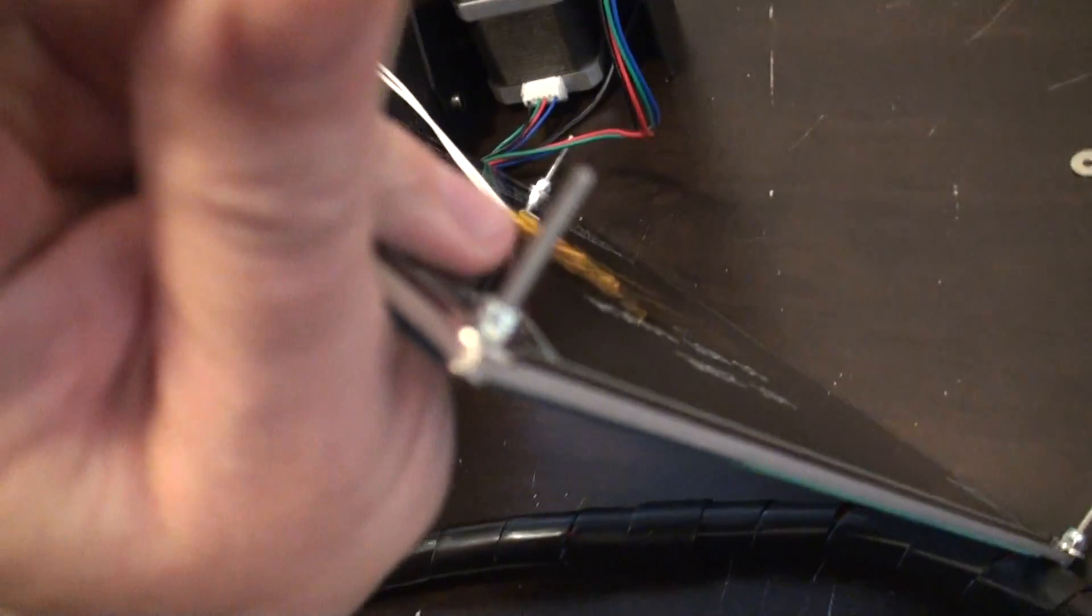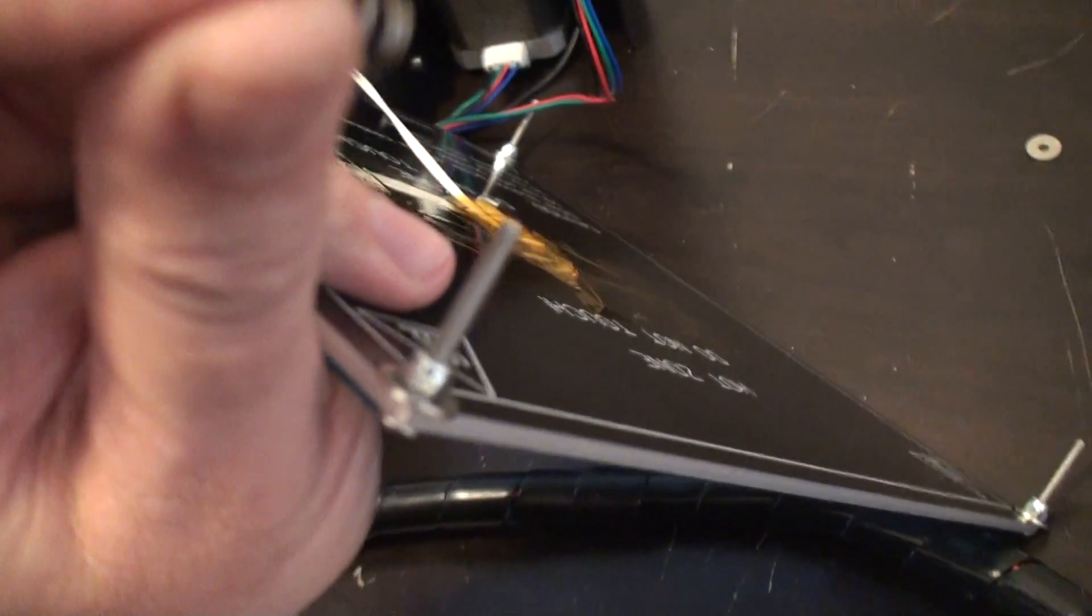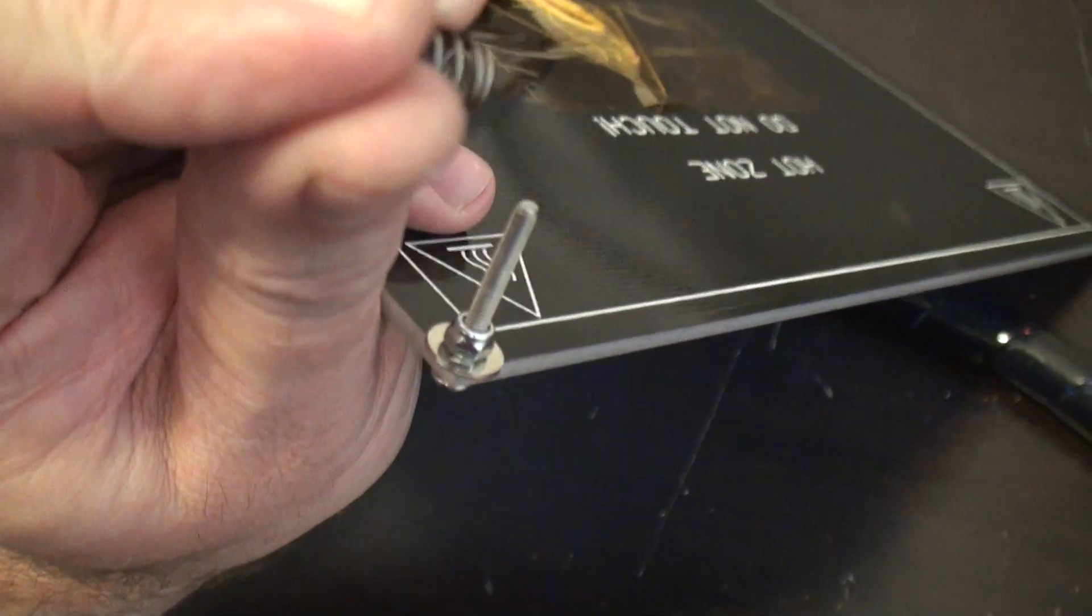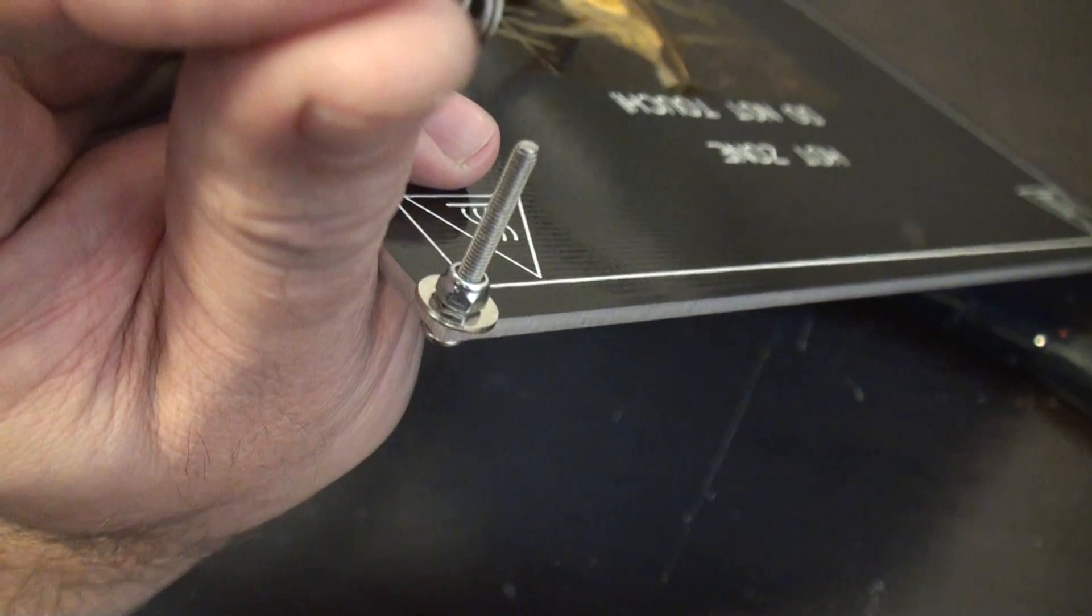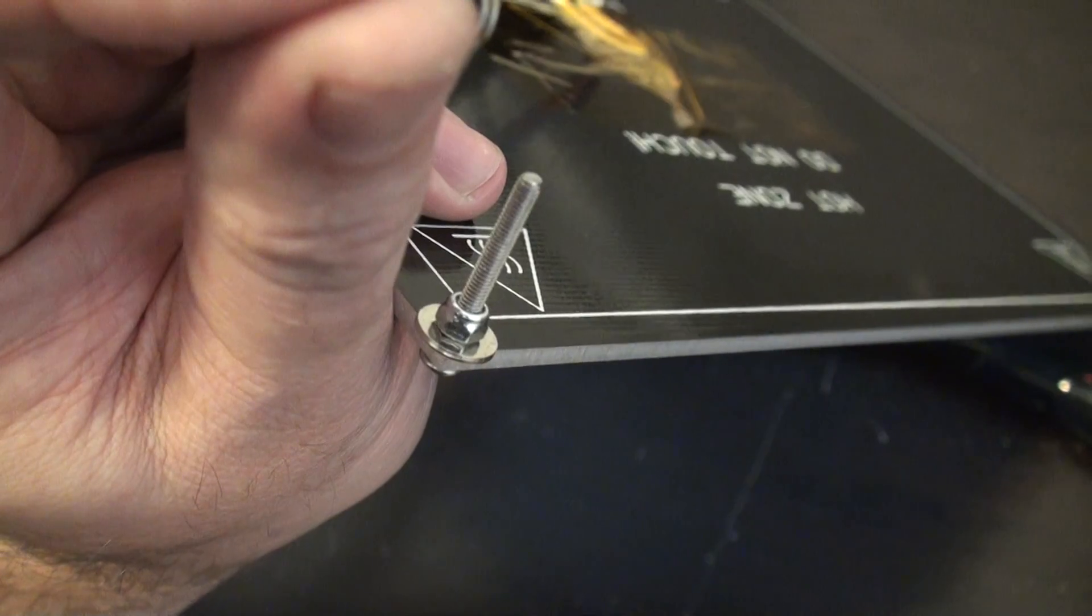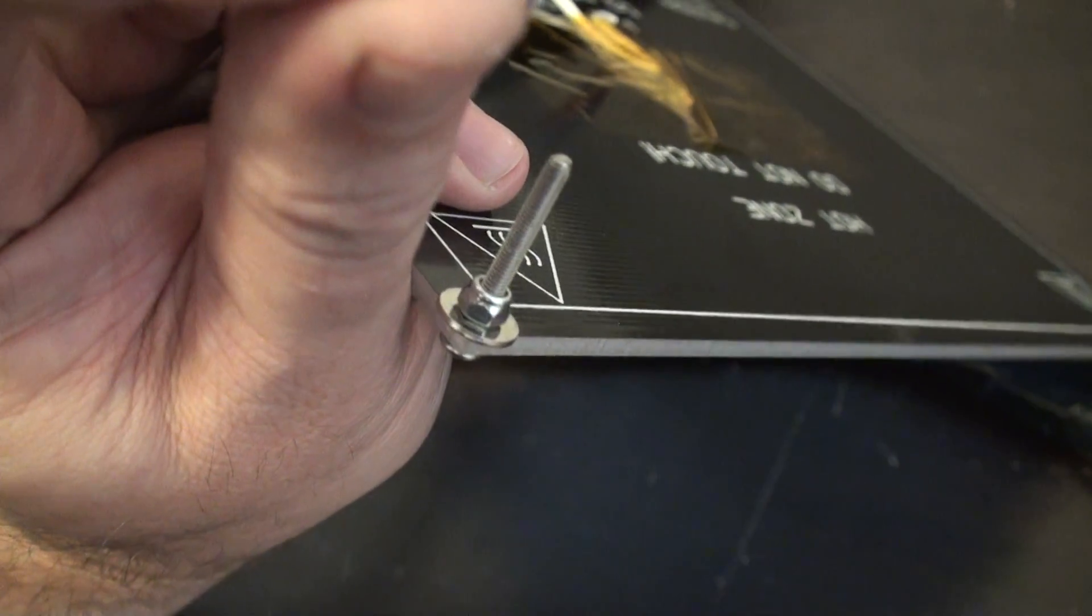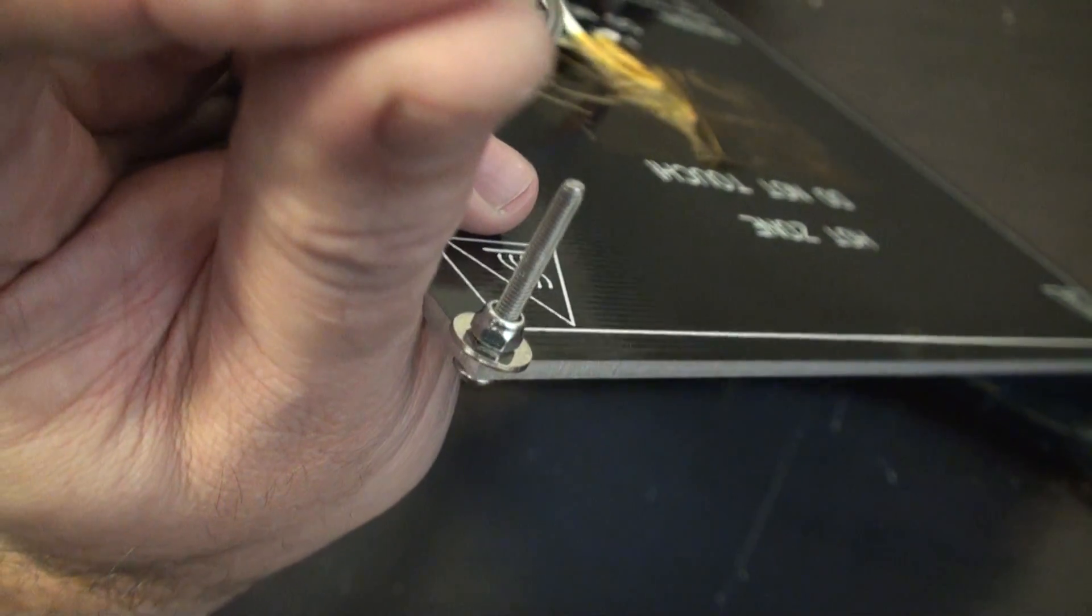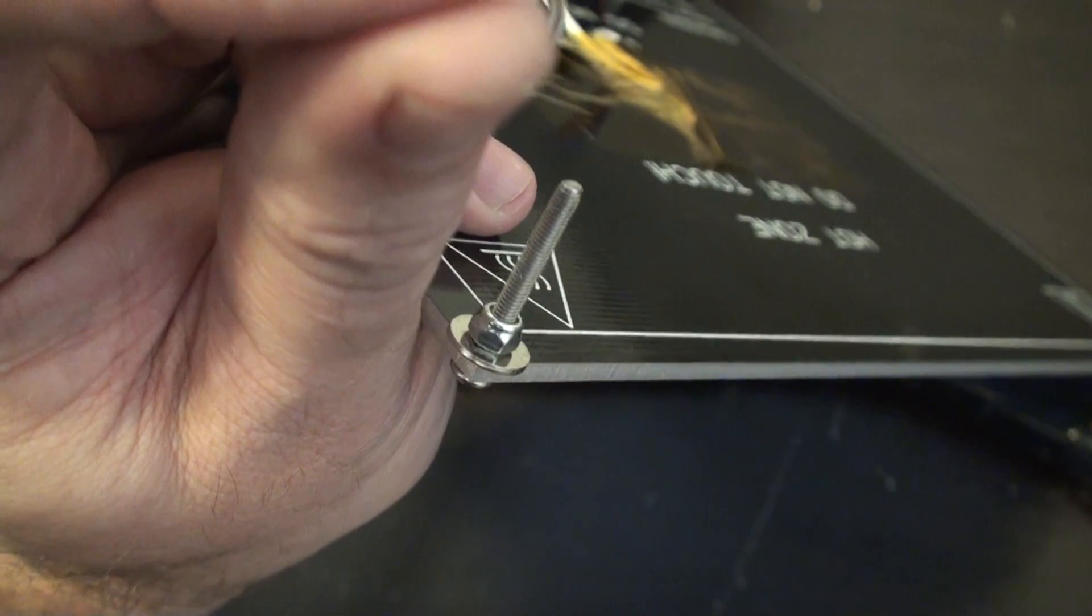Now the difference is I've added an M3 lock nut to lock it down. One of the things you've got to do is make sure when you put that washer in—if you look at them really close, one side is kind of curved from the way they're punched out or machined.